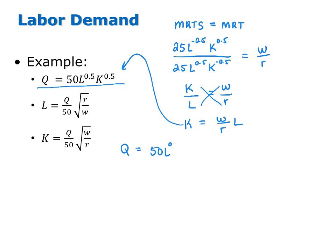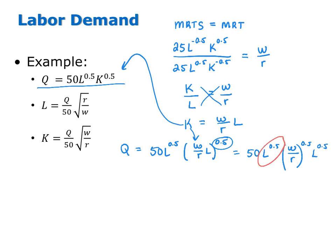Output equals 50 L to the 0.5 times K to the 0.5. But now instead of K I'm substituting K equals W over R times L. I distribute the exponent through the parentheses to give me 50 L to the 0.5 times W over R to the 0.5 times L to the 0.5. Because L appears in two places, I simplify by combining those terms: L to the 0.5 times L to the 0.5 is L to the 1.